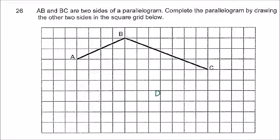If you look at BC, we have to go to the right. One, two, three, four, five, six, seven. Seven units to the right. One, two, three. Three units down.